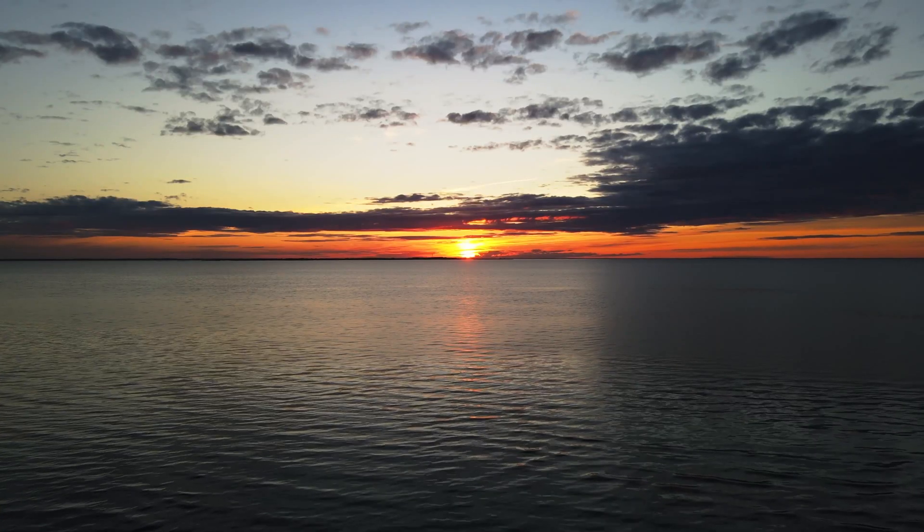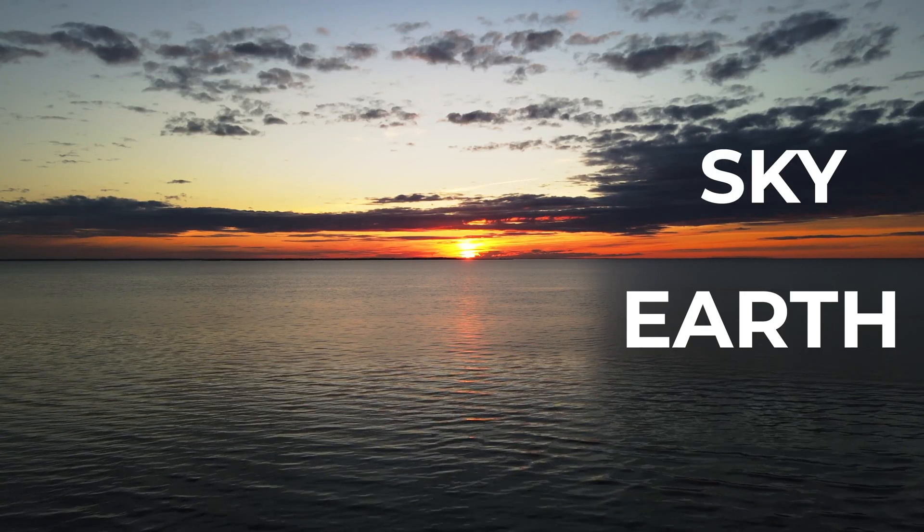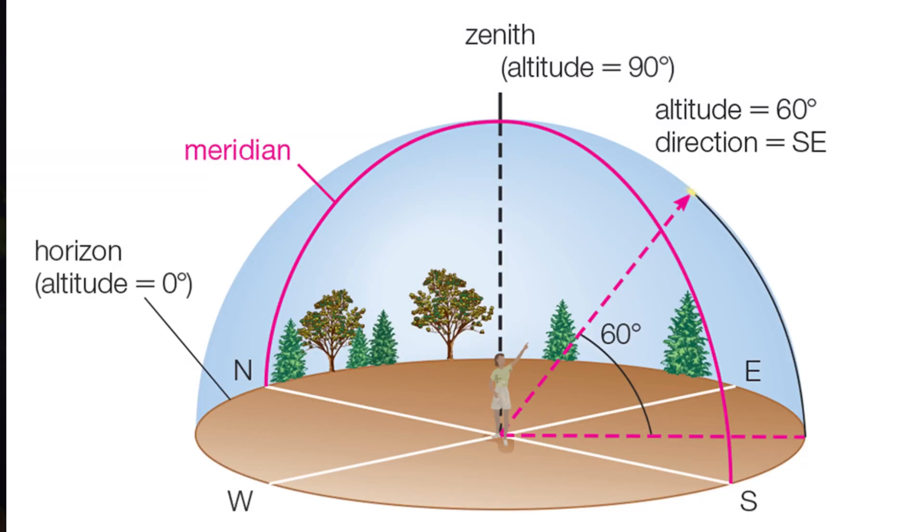But what do you actually see when you go outside? You don't see a sphere — you see a dome. And depending on where you live, that dome has different stars visible at different times. So let's go over some key terms. The boundary between the earth and the sky is called the horizon. The point directly overhead is called the zenith, no matter where you are. And the meridian is an imaginary half circle stretching from the horizon due south, through the zenith, to the horizon due north.